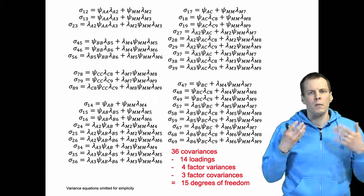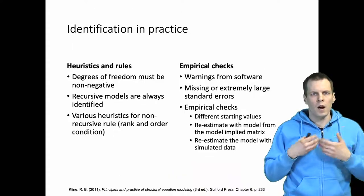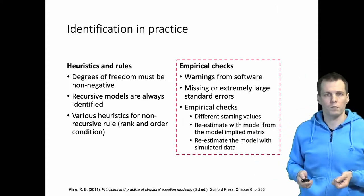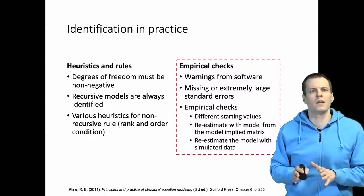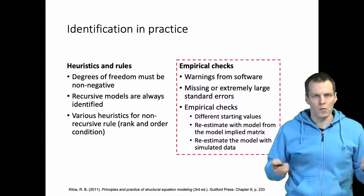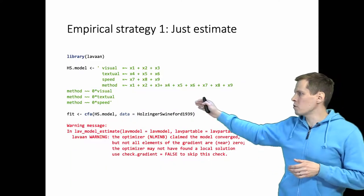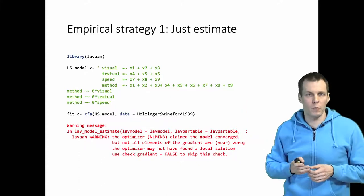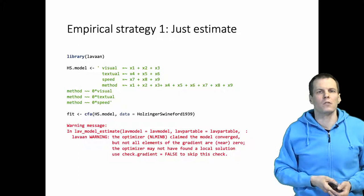When something goes beyond your skills in proving identification, there are other strategies you can apply. There are empirical ways of checking identification, so we're going to use the empirical checks strategy to show that this model is identified — but also to show that there is more to the identification story. We start with the empirical strategy: just estimate the model. I'll use the Holzinger-Swineford data in R, with a visual and textual speed factor each measured with three indicators, and an unmeasured method factor on which all indicators load. We got a warning — is that an indication of non-identification?